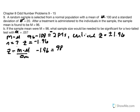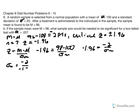Replacing variables: 98 minus 100 divided by the standard error. Simplifying, negative 1.96 equals negative 2 over the standard error. Solving for the standard error: standard error equals negative 2 over negative 1.96. Doing the calculation, negative 2 divided by negative 1.96 gives us 1.02.